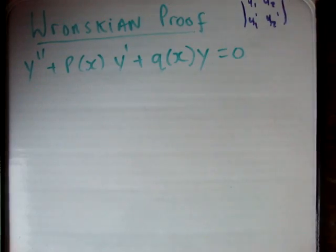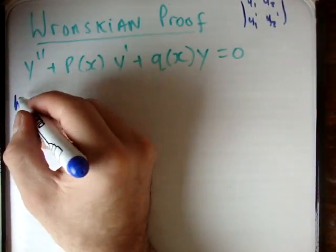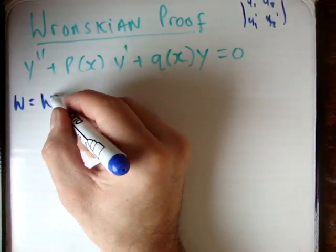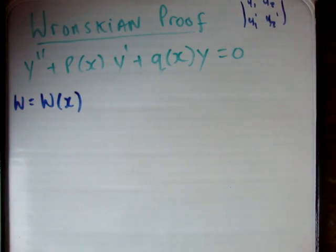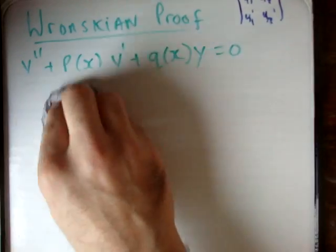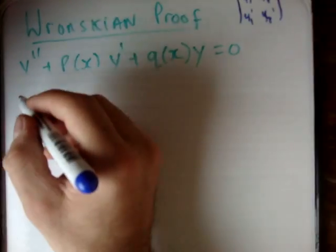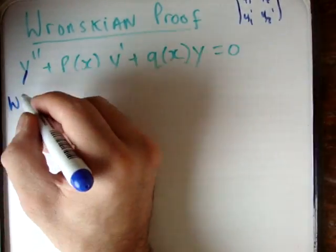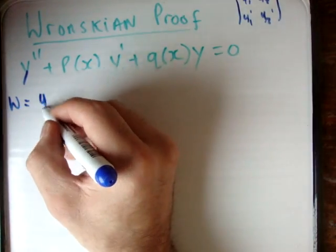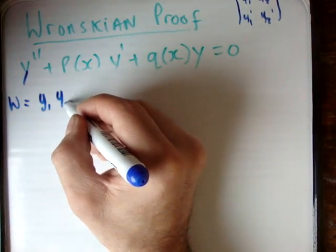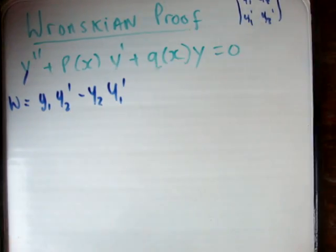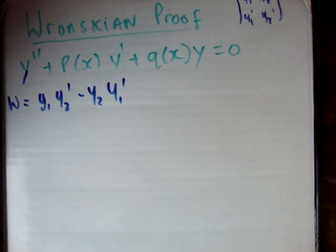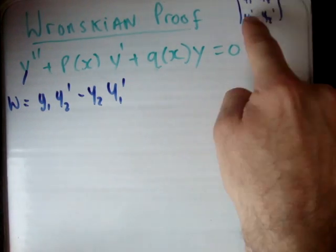The first thing we need to do is calculate the Wronskian. So w is a function of x — I'll just say w from now on. By being very careful and doing it slowly, you'll find that the Wronskian is equal to y1·y2 prime minus y2·y1 prime — that's ad minus bc on your determinant.